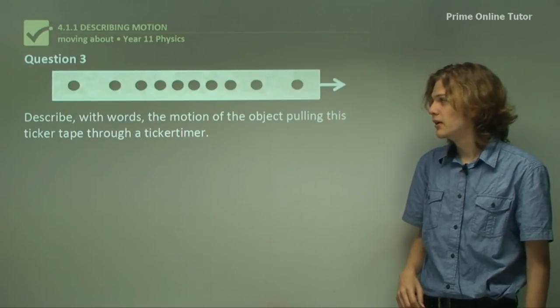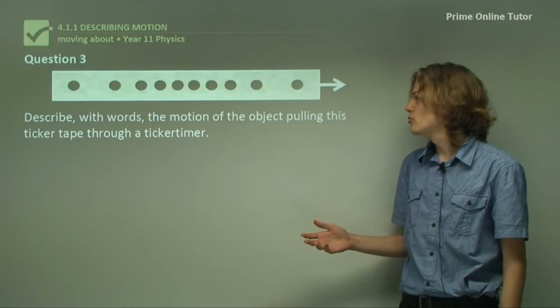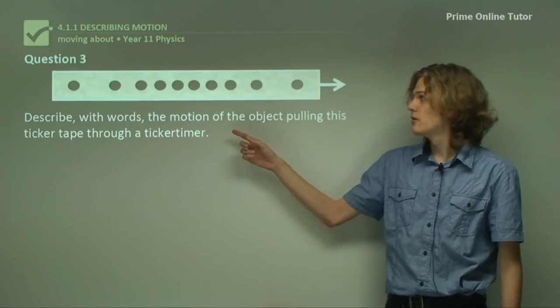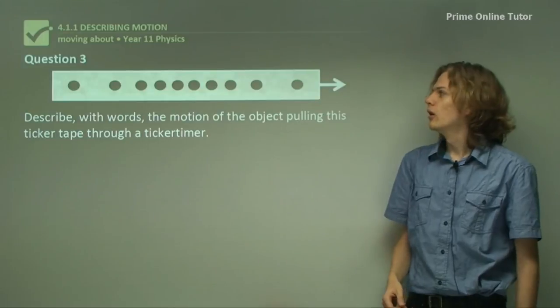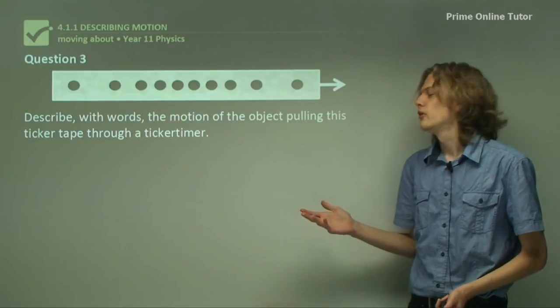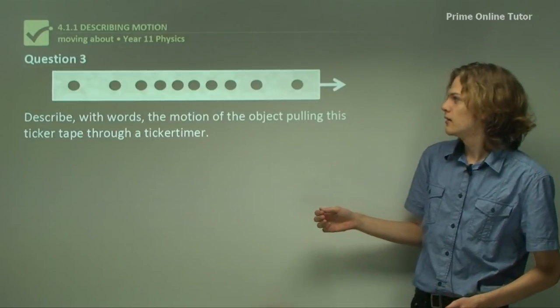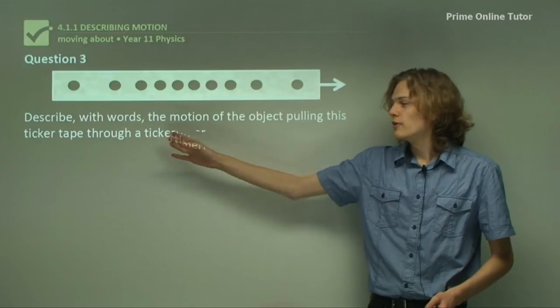Question 3. Describe with words the motion of the object pulling this ticker tape through a ticker timer. Well, let's take a look at the dots on the piece of tape.